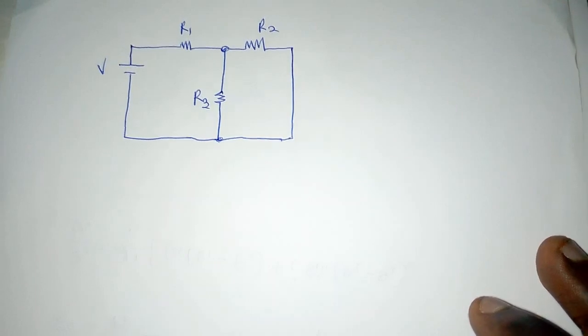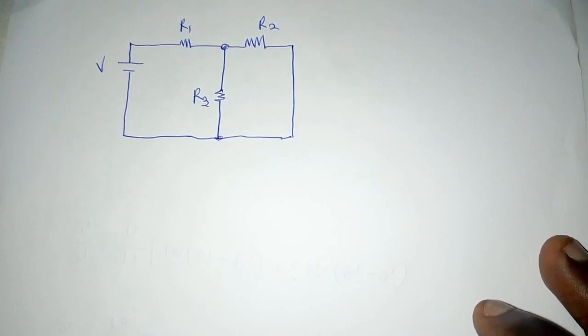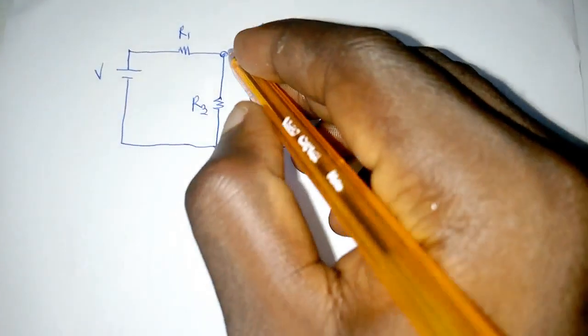A node is simply any point in a circuit where currents can either divide or add, and then we simply represent it by a dot, as we can see over here.